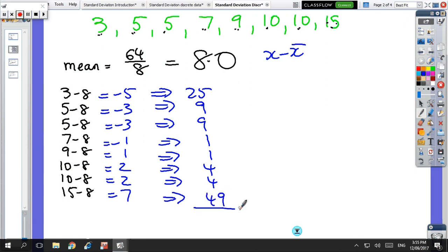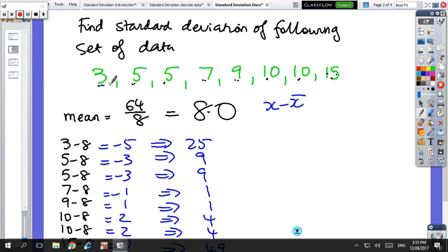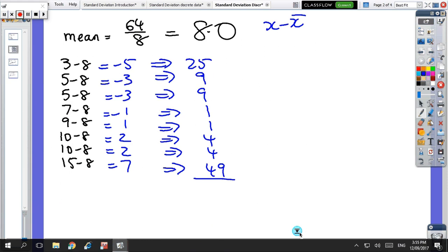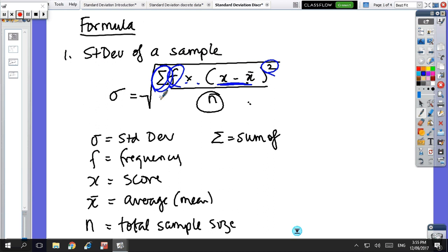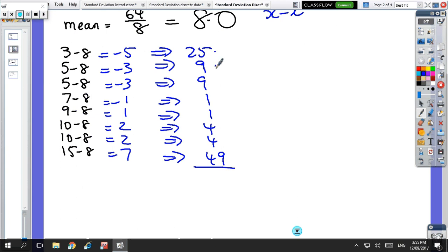And in the formula it said frequency times that number, but in this set of data we're just assuming that it's one of all of them. So I've done that calculation, and then in the formula it says to add them up. So if I add up those numbers, so 29, 34, 43, 44, 45, 49, 53, 93, 102.